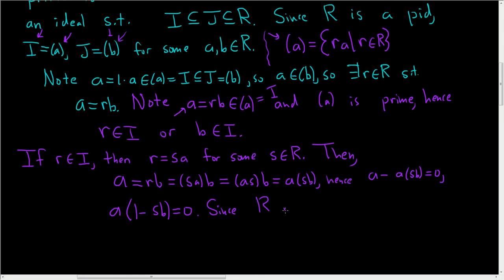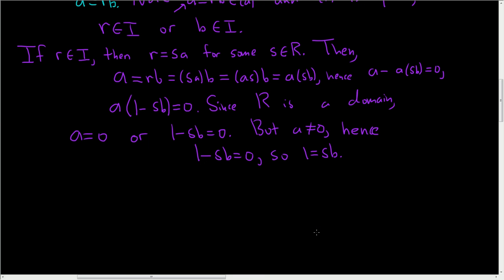Since R is a domain, we have a equal to 0, or 1 minus sb equal to 0. But a is not 0, because if it were, then I would be the 0 ideal. We said it was a non-zero ideal. So a is not equal to 0. Hence, 1 minus sb is equal to 0. So 1 is equal to sb. So what does that mean? Well, that means that b is a unit.